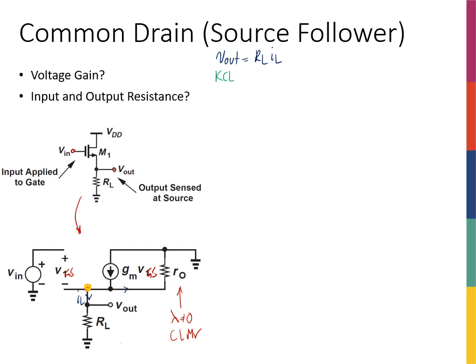KCL at Vout: I know that I have GM·VGS coming in, and that is equal to the current IL, which is Vout divided by RL, plus the current that goes to R0, which is Vout divided by R0. R0 is actually from Vout to ground. R0 and RL are in parallel because they're both connected to ground on one end and to Vout on the other end.